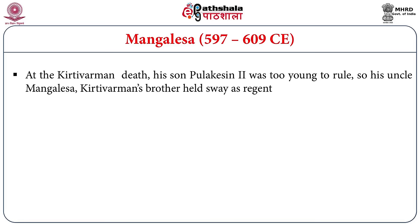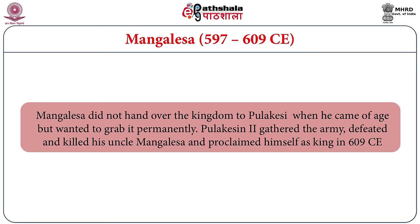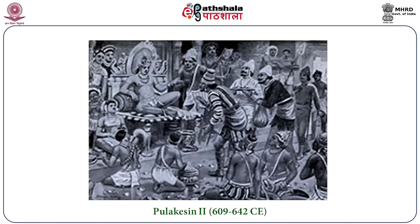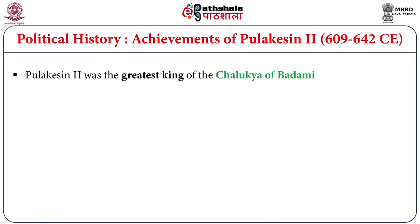Mangalesha continued the policy of expansion and invaded the territory of Kalachuri king Budraja, extending over Gujarat, Khandesh and Malwa. Thus the Badami Chalukyan kingdom expanded over Maharashtra and up to Gujarat region. Mangalesha did not hand over the kingdom to Pulakesi II when he came of age but wanted to hold it permanently. Because of that, Pulakesi II gathered his loyal friends and army, defeated and killed his uncle Mangalesha, and proclaimed himself king in 609 CE. It is known that Pulakesi II was the greatest ruler of the Chalukyas of Badami and also a great ruler of India. He ruled between 609 to 640 CE and is credited with many achievements.